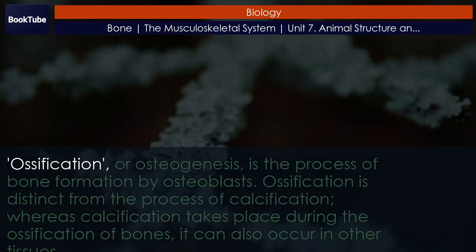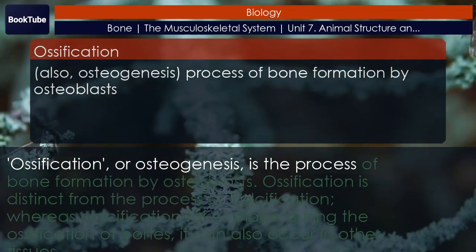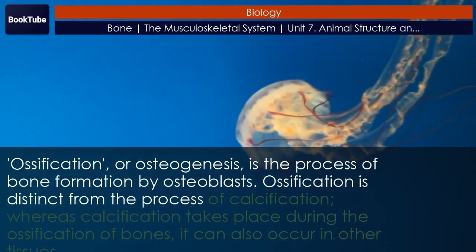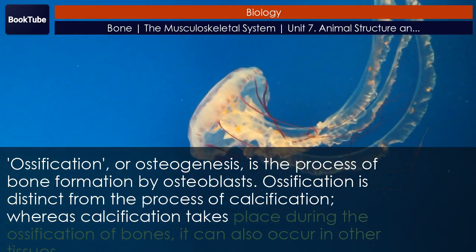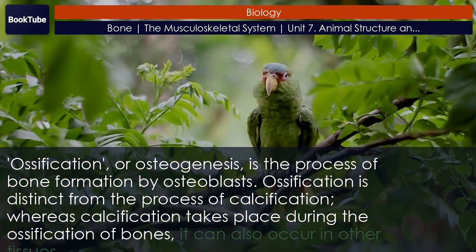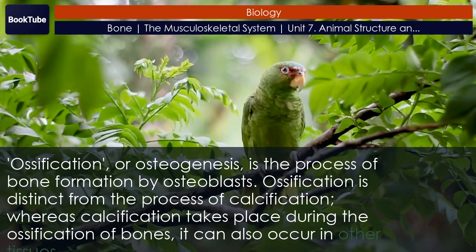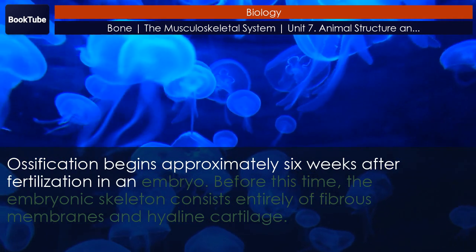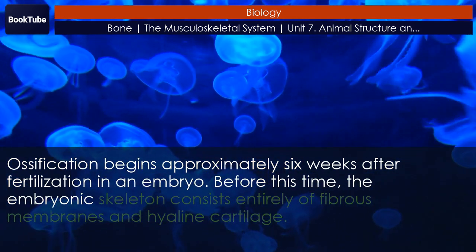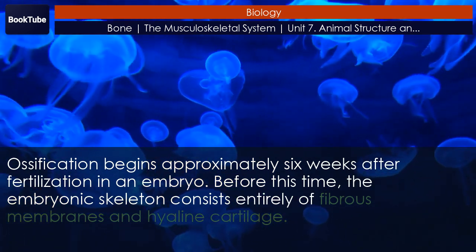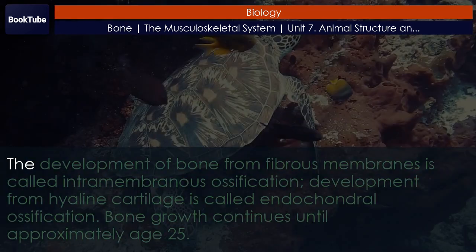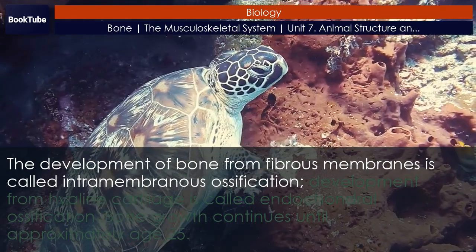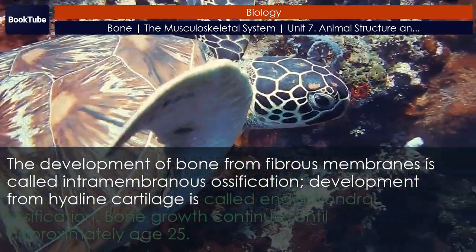Ossification, or osteogenesis, is the process of bone formation by osteoblasts. Ossification is distinct from the process of calcification — whereas calcification takes place during the ossification of bones, it can also occur in other tissues. Ossification begins approximately six weeks after fertilization in an embryo. Before this time, the embryonic skeleton consists entirely of fibrous membranes and hyaline cartilage. The development of bone from fibrous membranes is called intramembranous ossification.